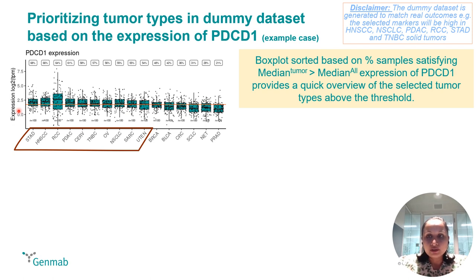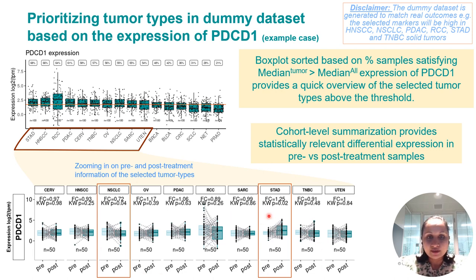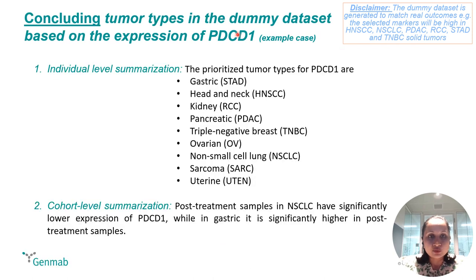Additionally, VIBE can also allow you to incorporate additional information, for example treatment or line of therapy, which can help identify the correct cohort of patients to enhance precision and personalized medicine. For example, here non-small cell lung cancer and gastric cancer have significantly different differences between pre- and post-treatment samples, so one can choose based on these outcomes how to prioritize the correct cohort of patients. With this, I conclude that we have individual-level summarization and cohort-level summarization, which allows us to identify tumor types and the right cohort of patients.